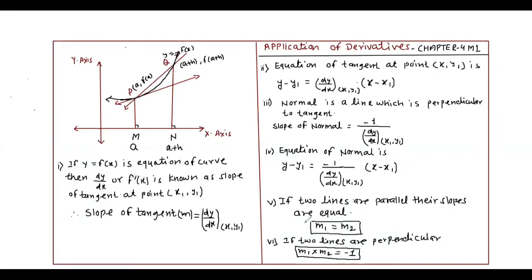Note one: If two lines are parallel, their slopes are equal — m1 is equal to m2. Note two: If two lines are perpendicular, the product of their slopes is minus 1 — M1 into M2 is equal to minus 1.